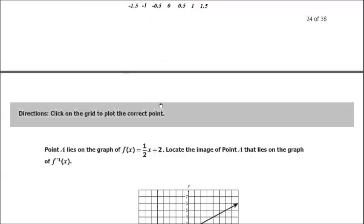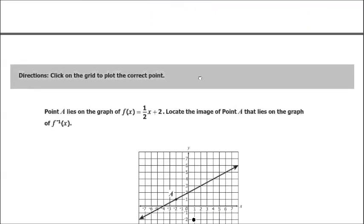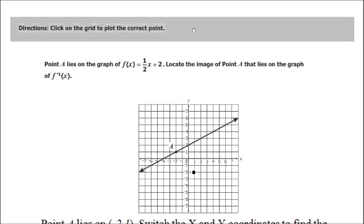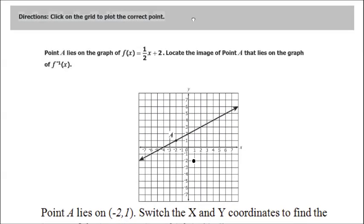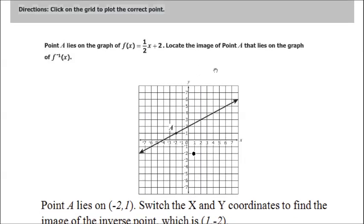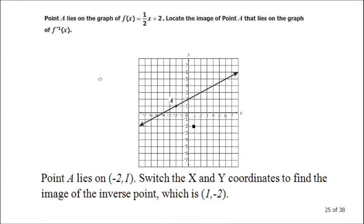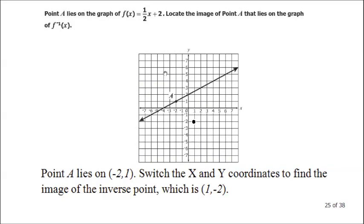Question 25. Directions: click on the grid to plot the correct point. Point A lies on the graph of f of x equals 1 half x plus 2. Locate the image of point A that lies on the graph of f inverse of x — the negative 1 notation means the inverse. Our function is plotted and point A is at (negative 2, positive 1).